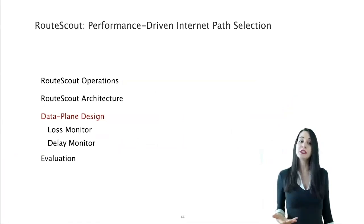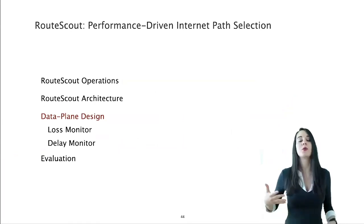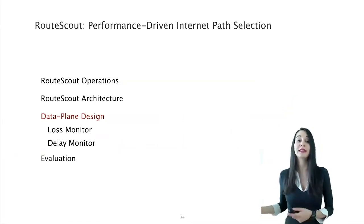For the rest of the talk, I will focus on the data plane design and I will show how we made it scalable. In a nutshell, RouteScout exploits TCP semantics together with probabilistic data structures to analyze the relevant packets, aggregate the measurements, and actuate the corresponding forwarding decisions.